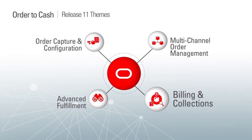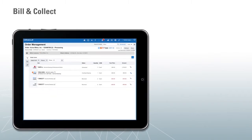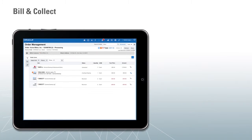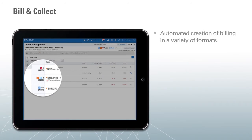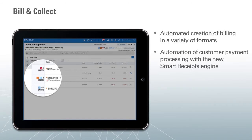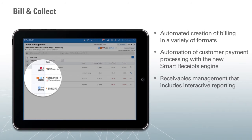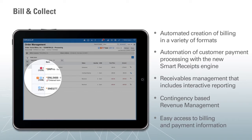Finally, billings and collections. The Financials Accounts Receivable and Revenue Management Cloud, part of the Oracle ERP Cloud, is fully integrated with the Order Management Cloud to provide automated creation of billing in a variety of formats to suit your company needs, automation of customer payment processing with the new Smart Receipts engine for more efficient cash application, receivables management that includes interactive reporting for quicker reconciliation and period close cycle, contingency-based revenue management, and easy access to billing payment information for managing customer inquiries and performing account adjustments.